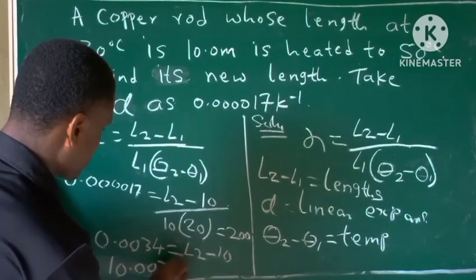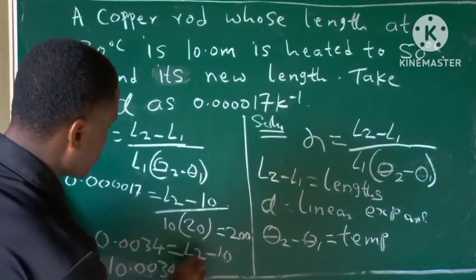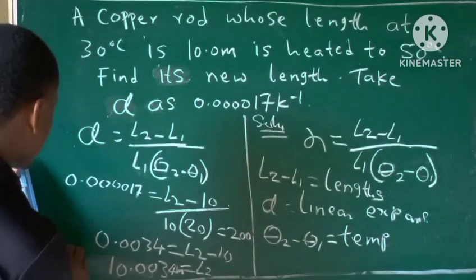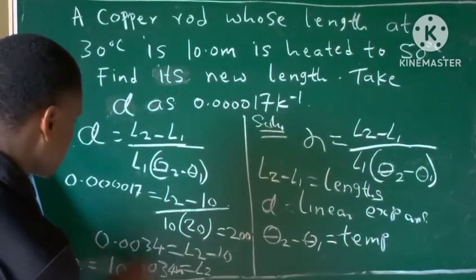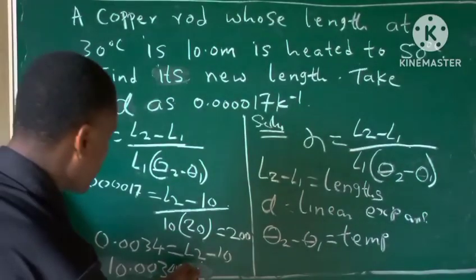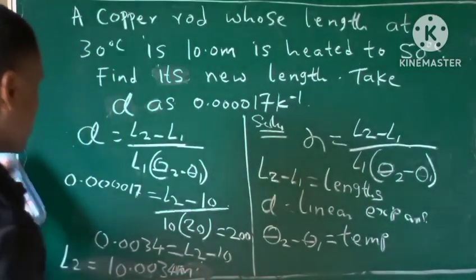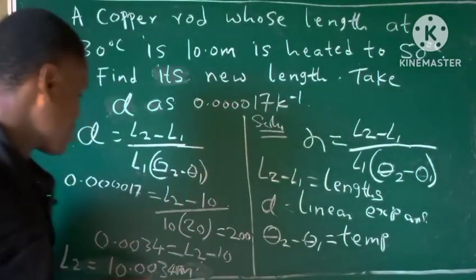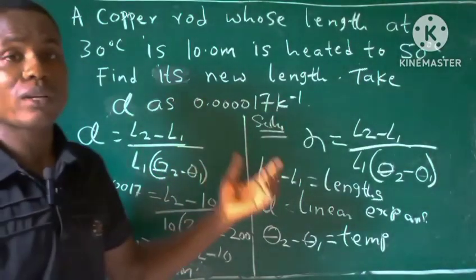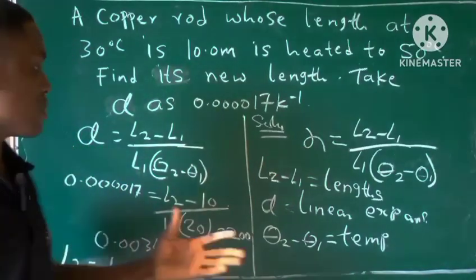So L2 equals this. So this is the value of the new length, which is 10.0034 meters. If you are given a similar equation like this under linear expansivity, you can use this formula or this procedure in solving that particular equation.